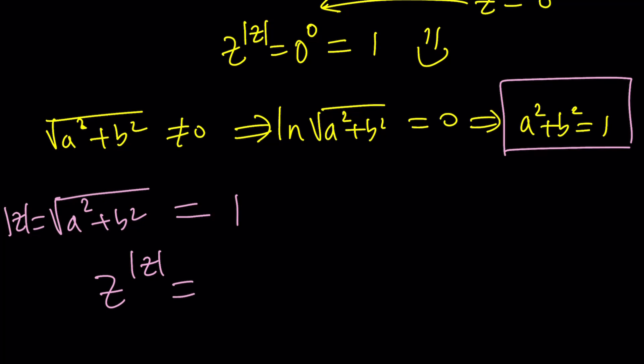What does that mean? It means because the absolute value is this and it's equal to one, so you can replace absolute value of z with one and that'll give you the answer, which is this one.